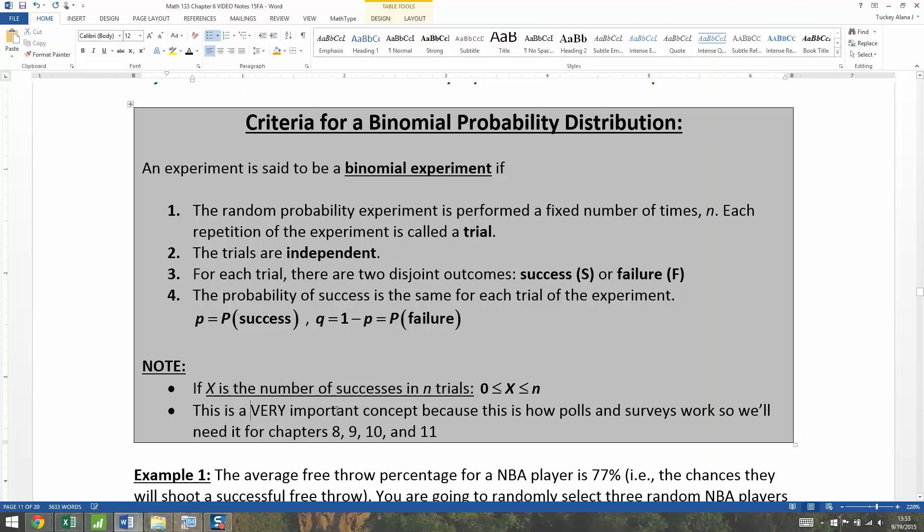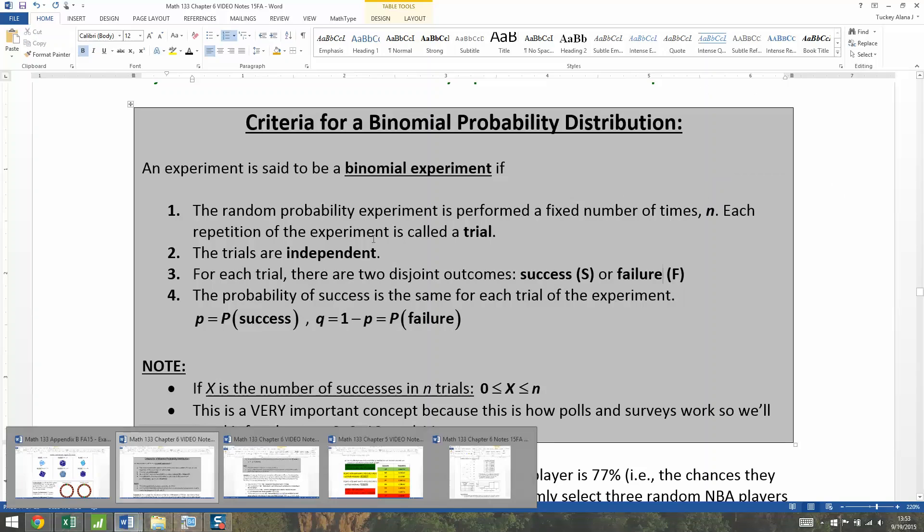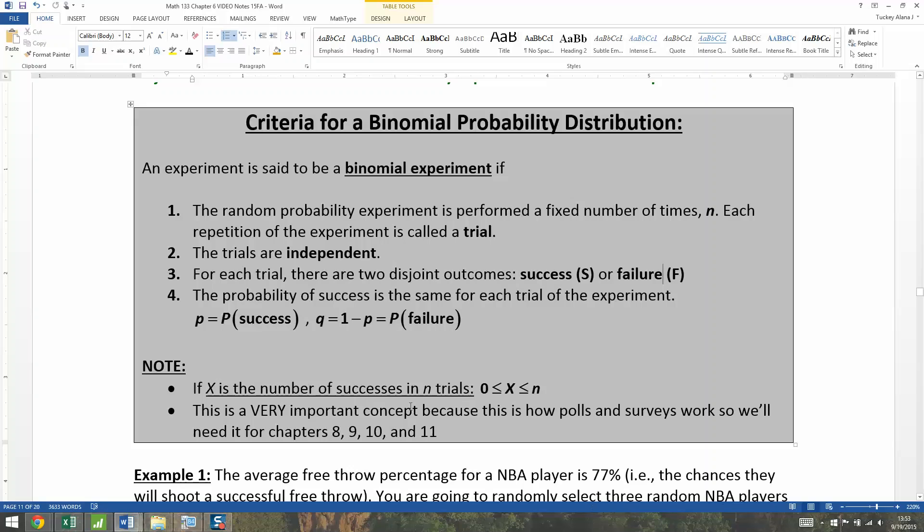That's an important idea. It can go as low as zero because you could have no successes, all the way up to n. If you have a fixed number of trials n, that would mean you have at most n successes. This is a really important concept because this is going to be how proportions are going to work for us in later chapters.